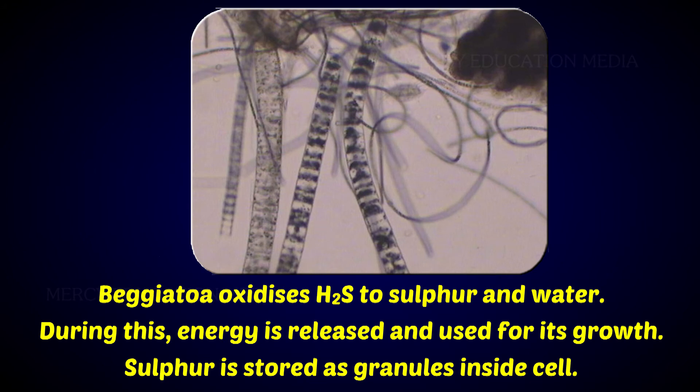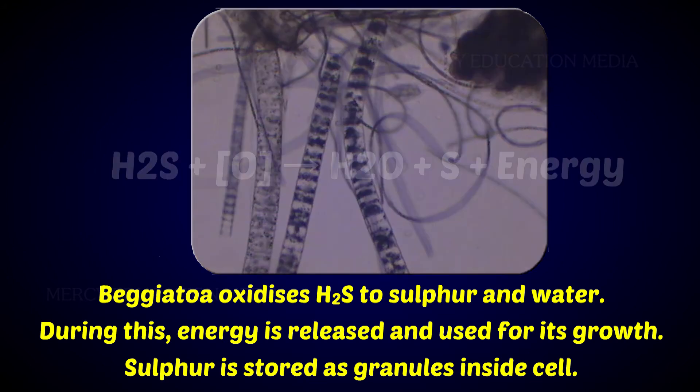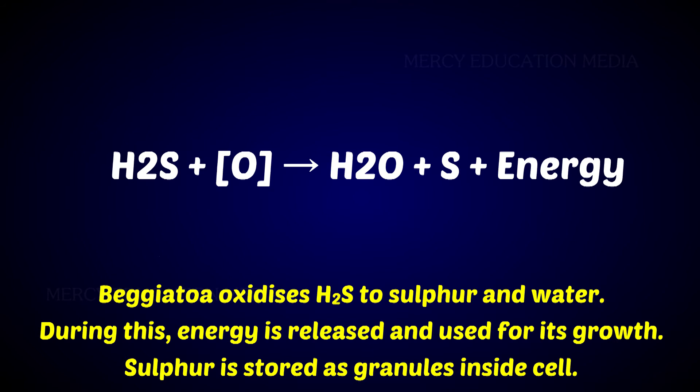Beggiatoa oxidizes hydrogen sulphide to sulphur and water. During this process, energy is released and used for its growth. Sulphur is stored as granules inside the cell. The reaction is: hydrogen sulphide plus oxygen forms water plus sulphur plus energy.